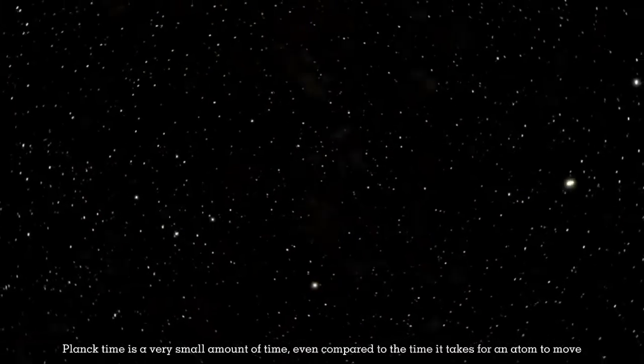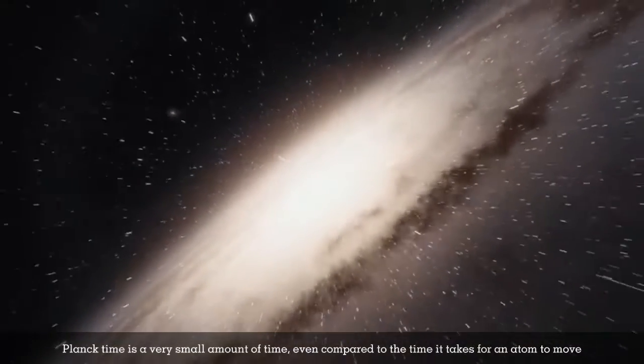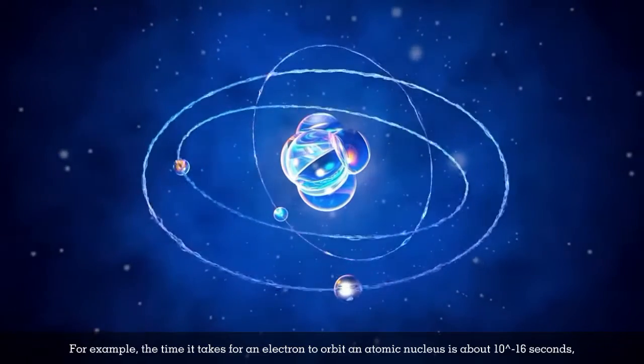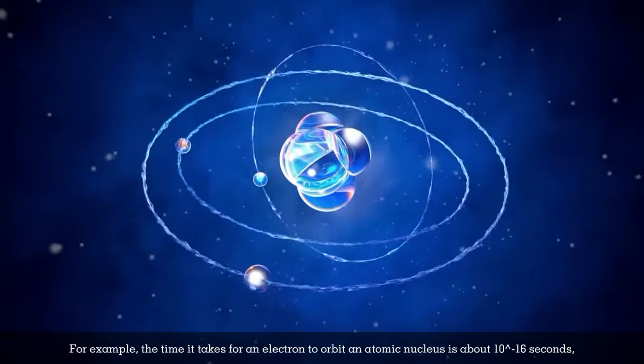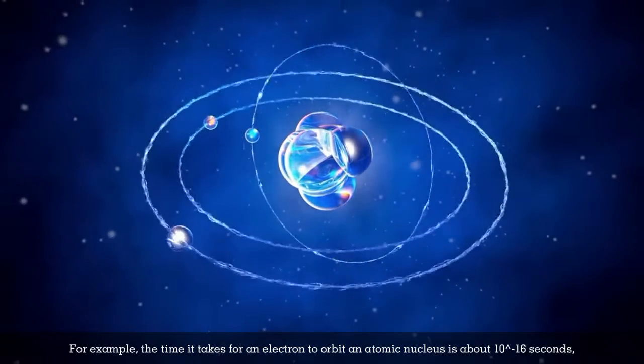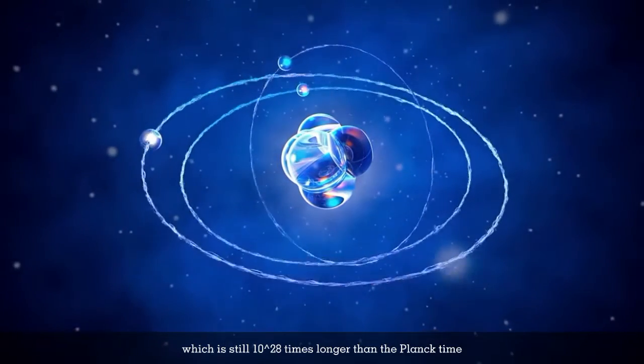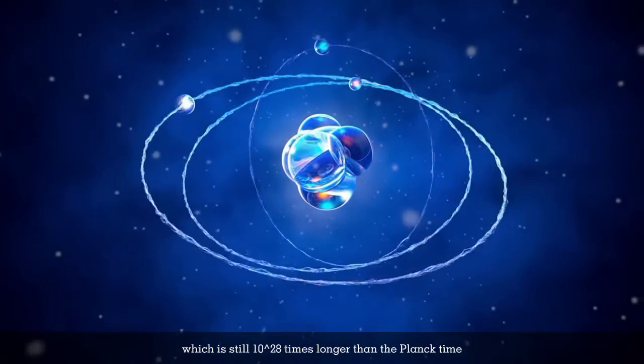Planck time is a very small amount of time, even compared to the time it takes for an atom to move. For example, the time it takes for an electron to orbit an atomic nucleus is about 10 to the power of minus 16 seconds, which is still 10 to the power of 28 times longer than the Planck time.